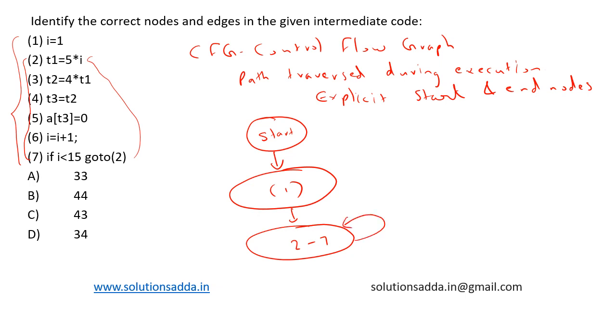Then there is an end node. So this is the whole control flow graph for the intermediate code. We have four nodes and we have four edges. These are the nodes: one...